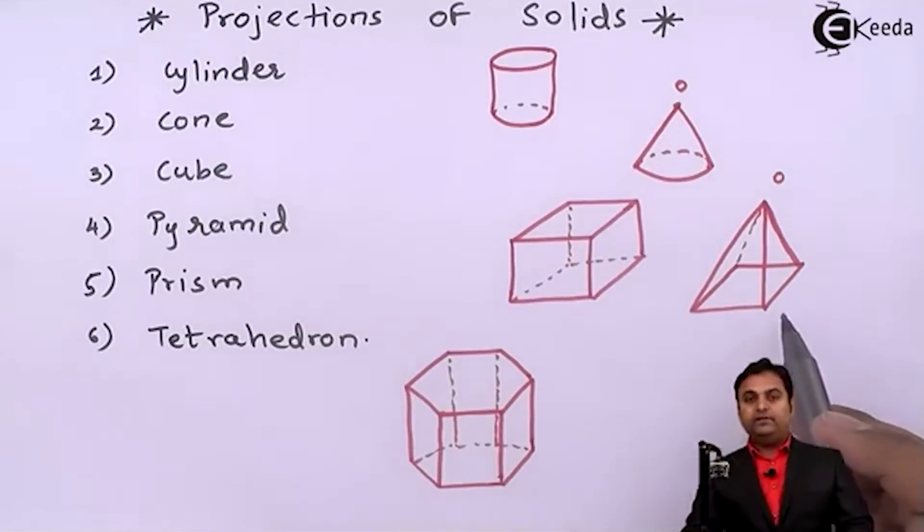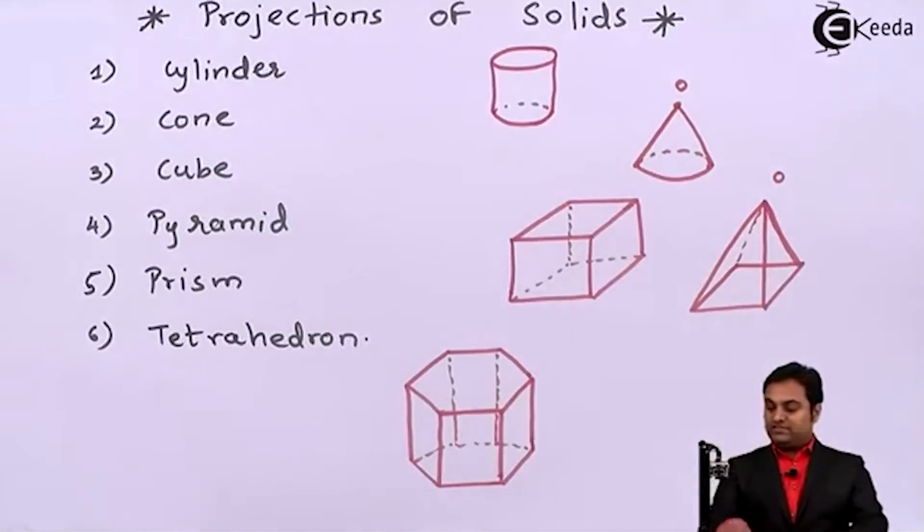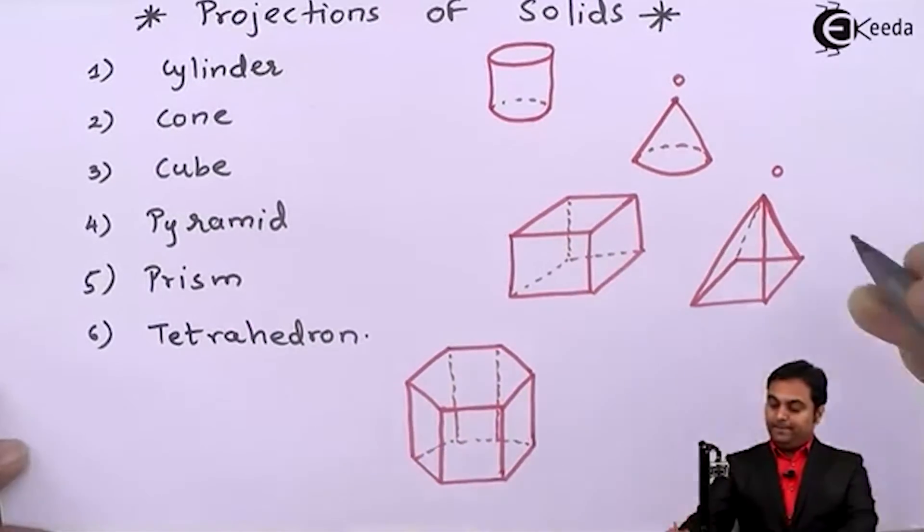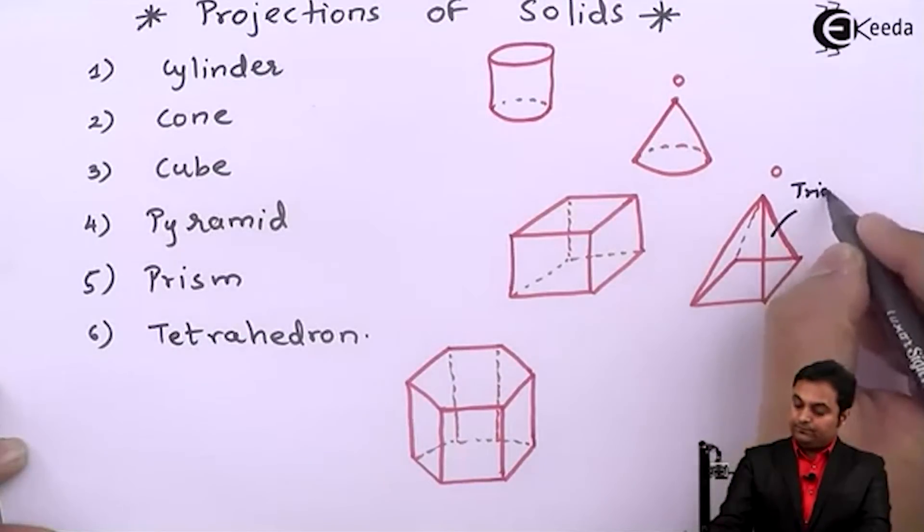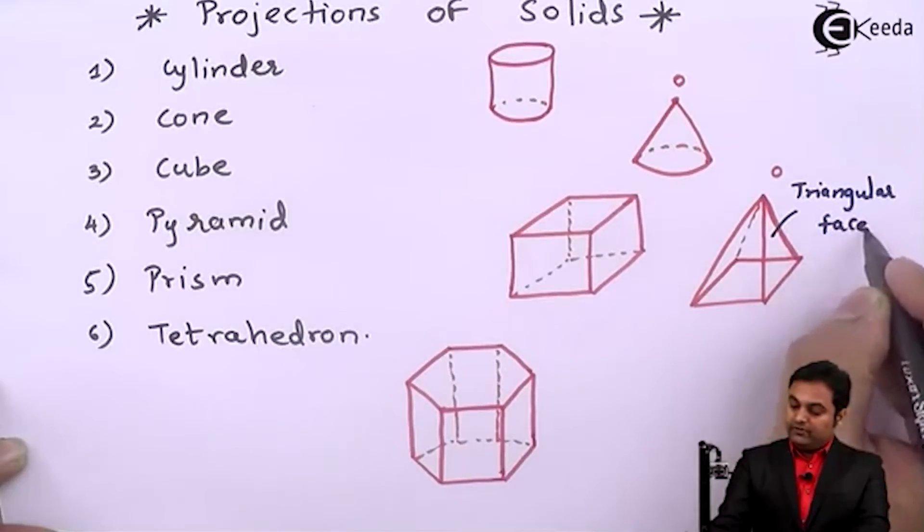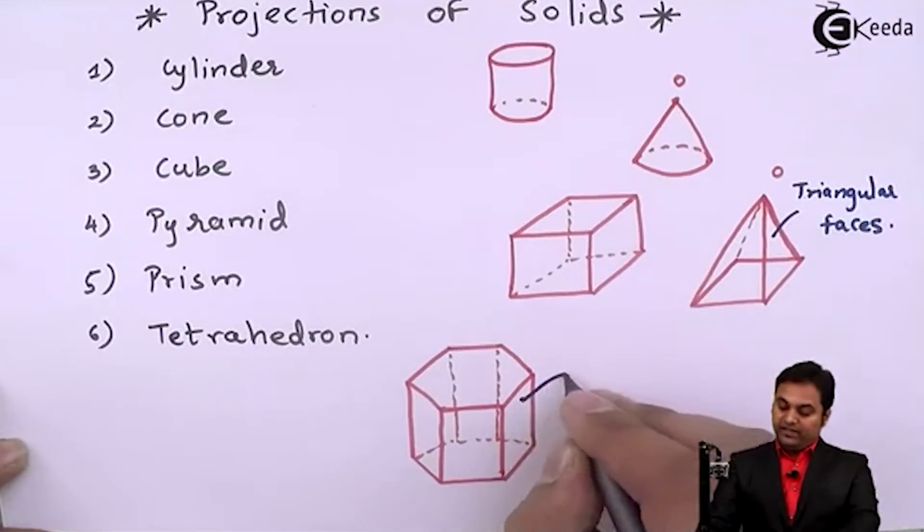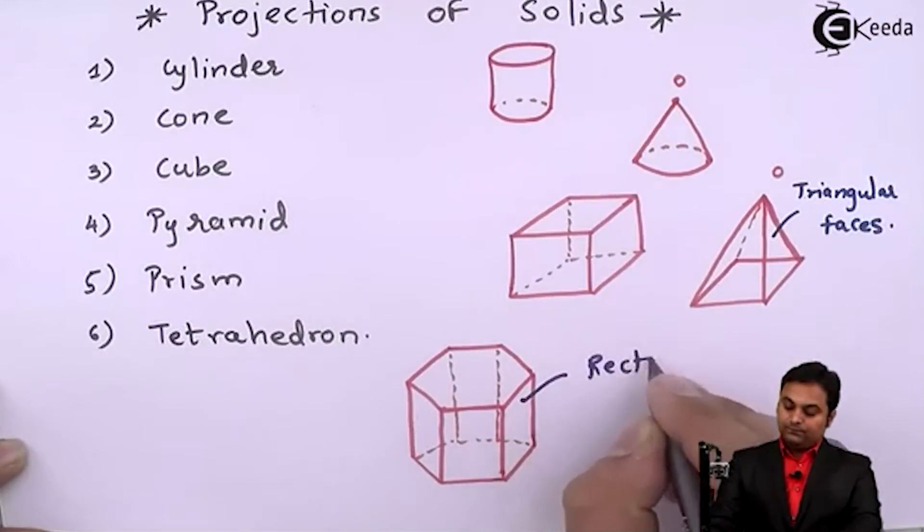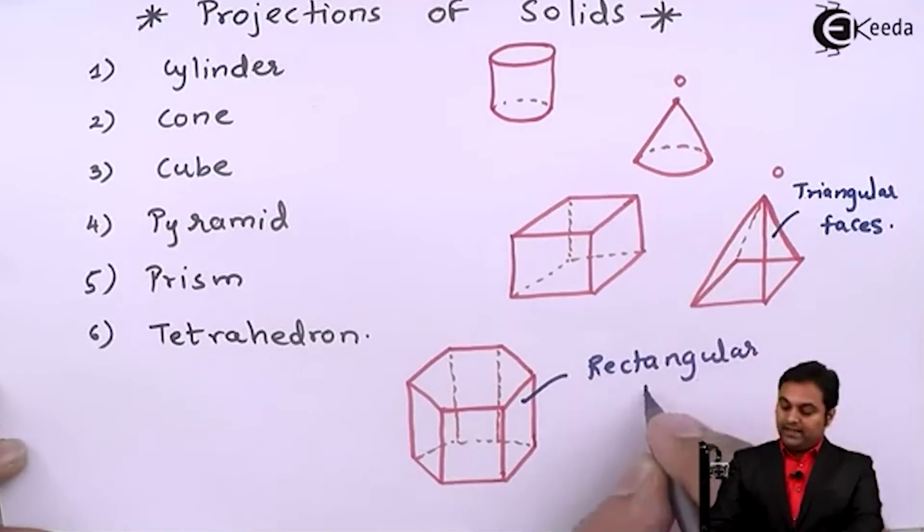Like in case of pyramid the base edges may be of any given shape. It may be square, it may be hexagon or pentagon, but the sides are triangular faces. In case of pyramid we have triangular faces. In case of prism we have rectangular faces.